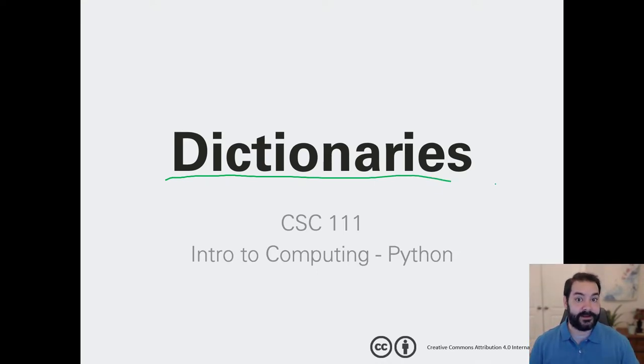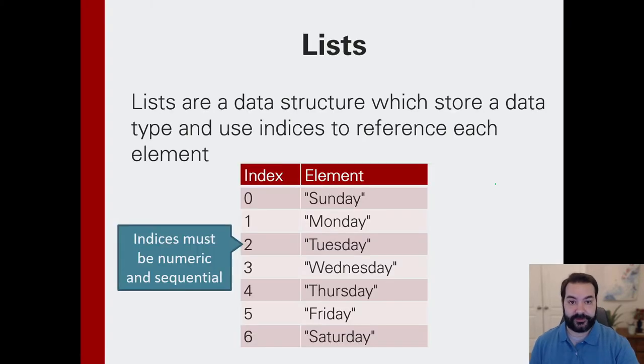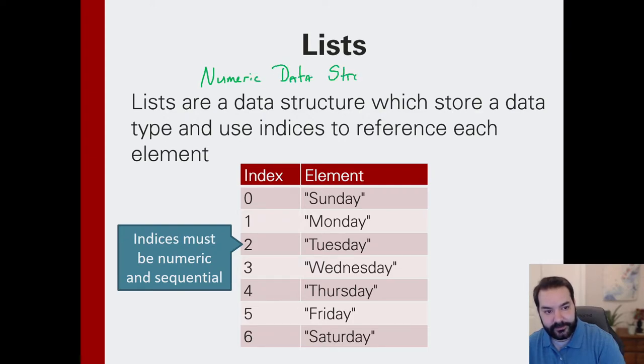Now, if we think about a traditional list for just a second, the idea behind a list, and to use a big fancy $5 word, is you could assume that they were something known as a numeric data structure. And all that is meaning is that we have, again, some index, and that index is using numerical values to reference each element inside of that list.